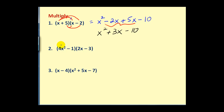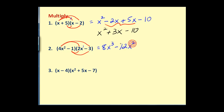For number two, same procedure: multiply 4x² times both terms in the second binomial, and then -1 times both terms. It may help to write 2x as 2x¹. So 4x² times 2x equals 8x³, 4x² times -3 equals -12x², -1 times 2x equals -2x, and -1 times -3 equals +3. There are no like terms and it's already in descending order, so we're finished: 8x³ - 12x² - 2x + 3.